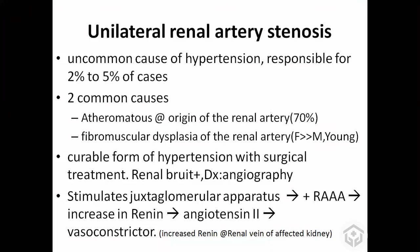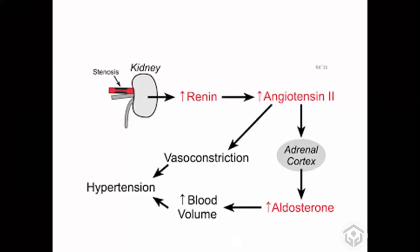Renin activates the renin-angiotensin-aldosterone axis: angiotensin 2 increases, causing vasoconstriction and hypertension. The body also releases aldosterone, causing water and sodium retention, aggravating hypertension. If you measure the renin level in blood from the left renal vein in left renal artery stenosis, the renin level will be high. Angiotensin stimulates zona glomerulosa of the renal cortex to secrete aldosterone, which acts on collecting ducts to increase water and sodium absorption.